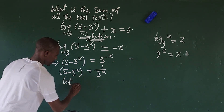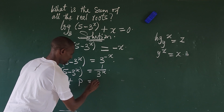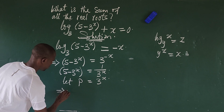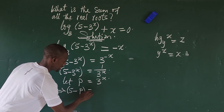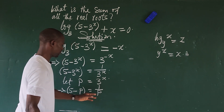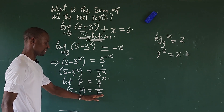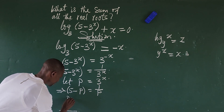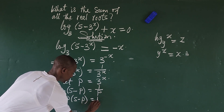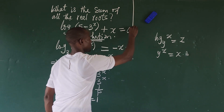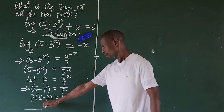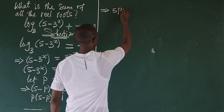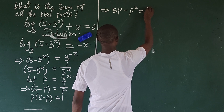So from here we do a kind of substitution since what we have here is the same. Let's bring in something to represent our 3 to the power of x. Let p equal 3 to the power of x. So we can rewrite this as bracket 5 minus p, plus bracket, equal to 1 all over p. We can open this up by multiplying both sides by p. So we're going to have p times 5 minus p, plus bracket, equal to 1. Opening up the bracket gives us 5p minus p squared equal to 1.